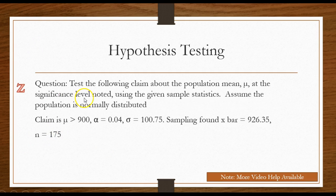Here's a Z type question. Test the following claim about the population mean mu at the significance level noted, given the sample statistics. Assume the population is normally distributed. Our claim is that the mean is greater than 900, the level of significance is 0.04 or 4%, our population standard deviation σ = 100.75, sampling found x-bar = 926.35, so that's my sample mean, and I had 175 data points. Here's another thing that throws students on these. Say they gave me the 175 data points. I would have to go find the sample average, the x-bar. But they've given me the population standard deviation. All I need to find is the mean of the sample data with these Z type questions where I have more than 30 in the sample size.